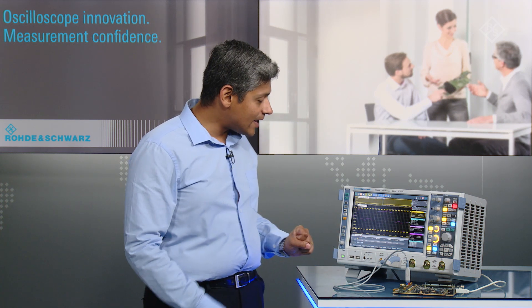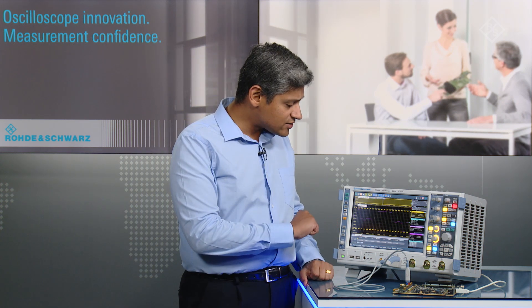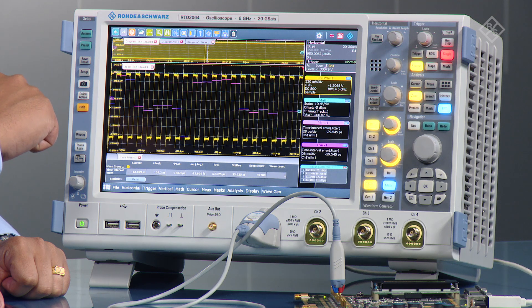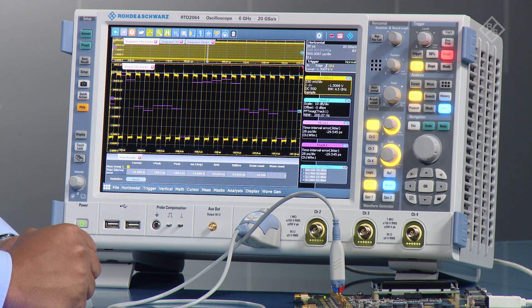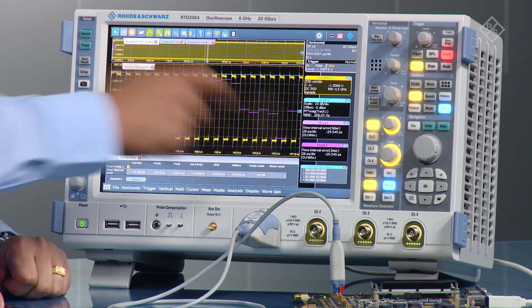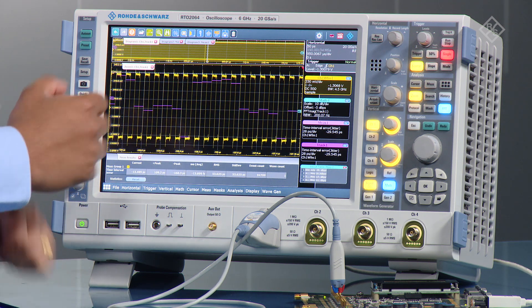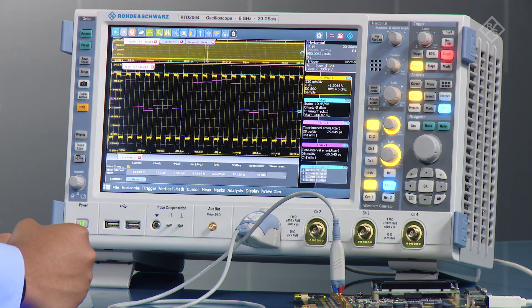For this example I've got a 10 megahertz clock signal going through here probed via differential probe on the demo board and as you can see here on the display we've actually captured a large amount of the trace data.